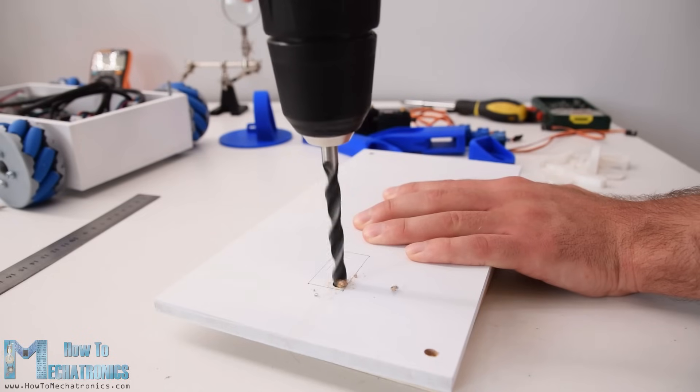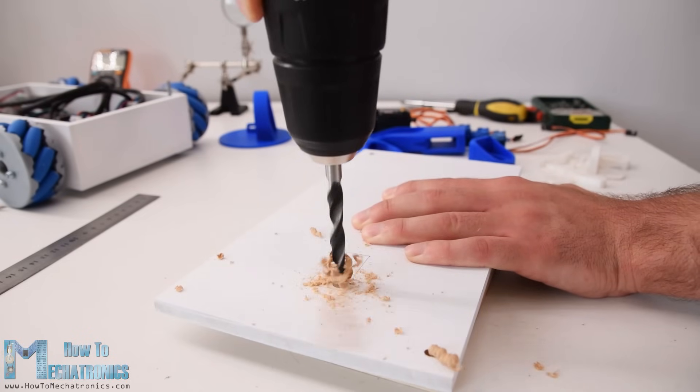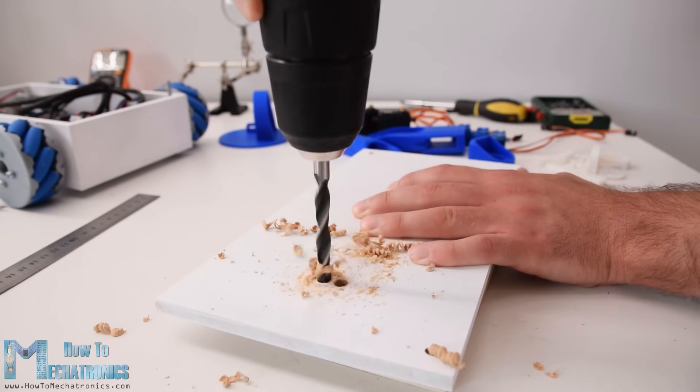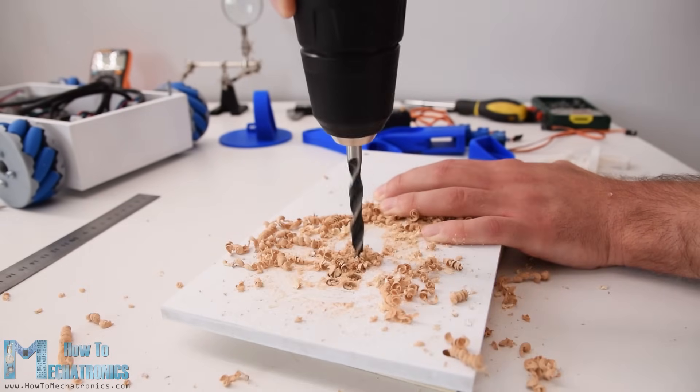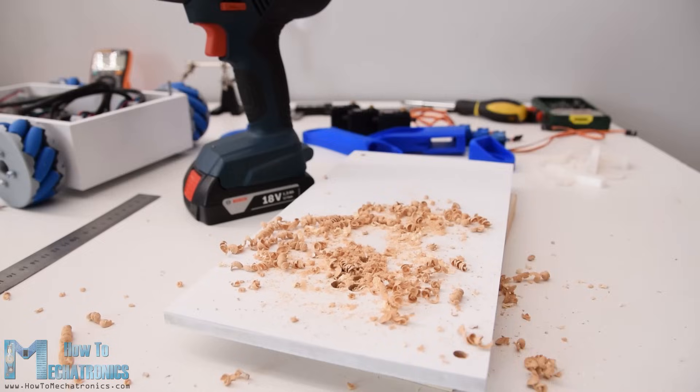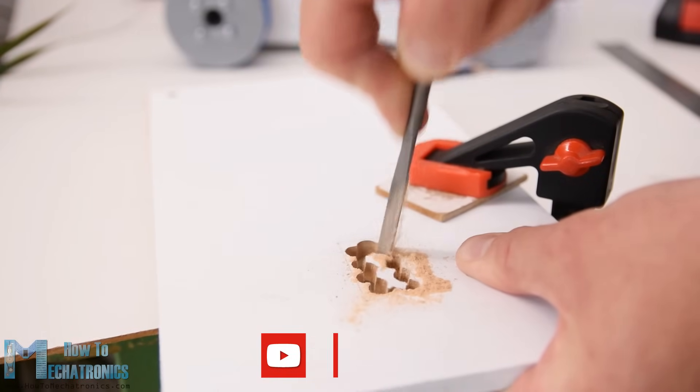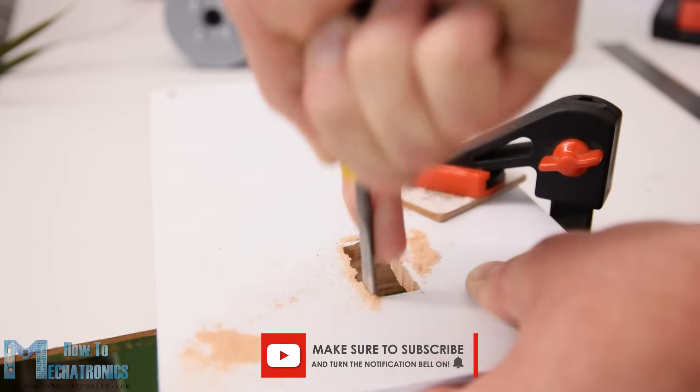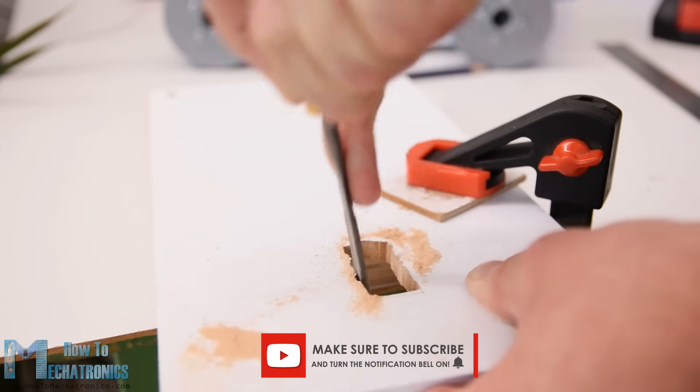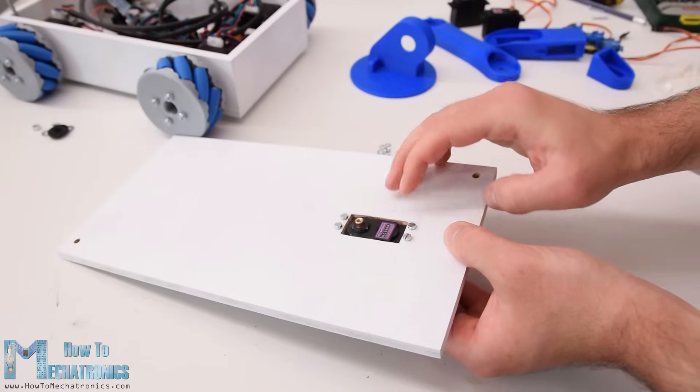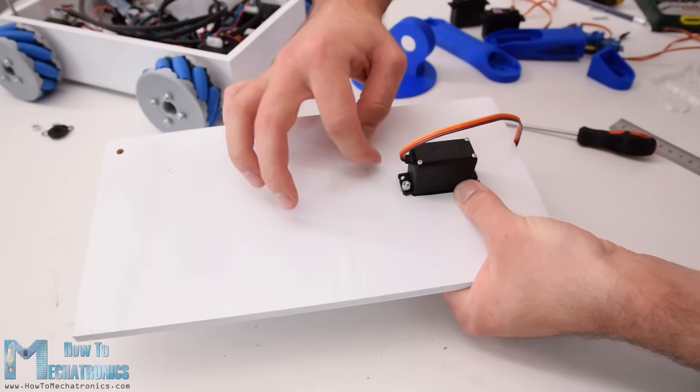The first servo of the Robot Arm will be directly mounted on the top cover of the Mecanum wheels platform. So I marked the location and using a 10mm drill, I made several holes. Then using a rasp, I cut through the holes and then fine-tuned the opening for the servo. I secured the servo to the top plate using 4 M3 bolts and nuts.